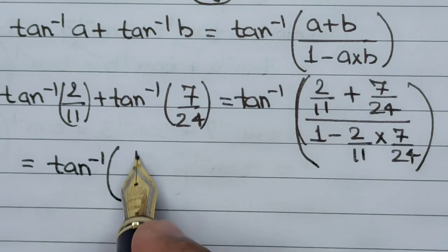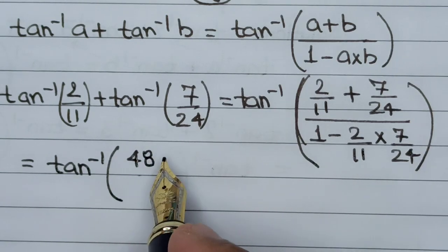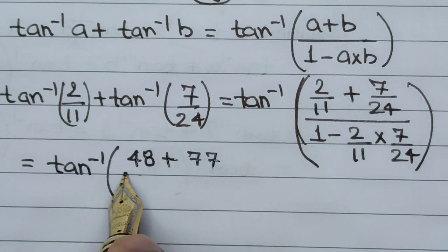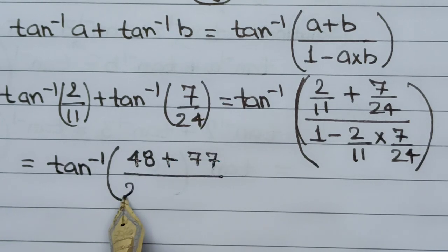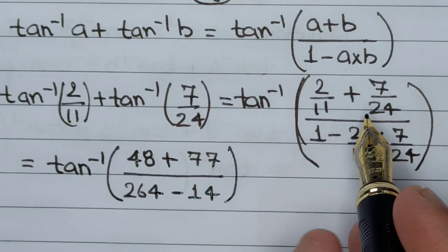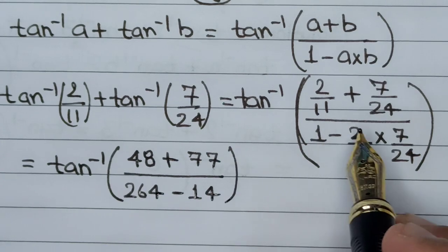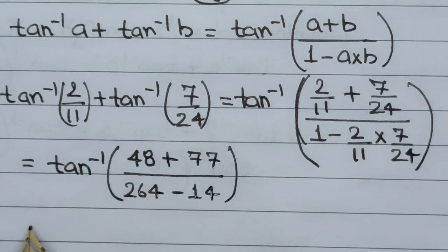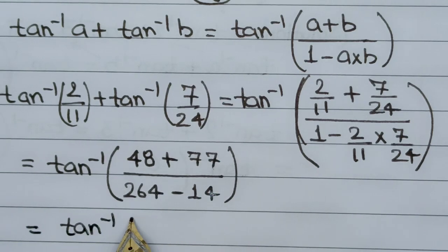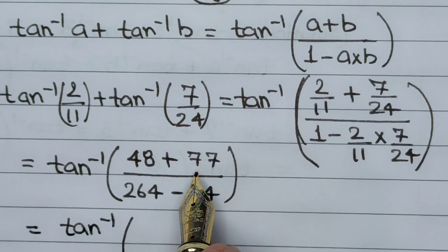It becomes (48 + 77)/(264 - 14). I've just taken the LCM of 11 and 24 directly, and then solving it we get tan⁻¹((48 + 77))...